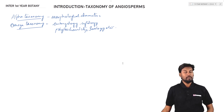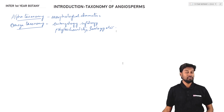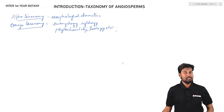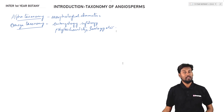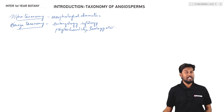Taxonomy of Angiosperms is about the arrangement of plants based on their characters — external characters, morphological characters, internal organs, or on an anatomy basis. It is about placing a group of organisms showing similarity in terms of vegetative and floral characters together in a particular order. Two important points are alpha taxonomy and omega taxonomy.